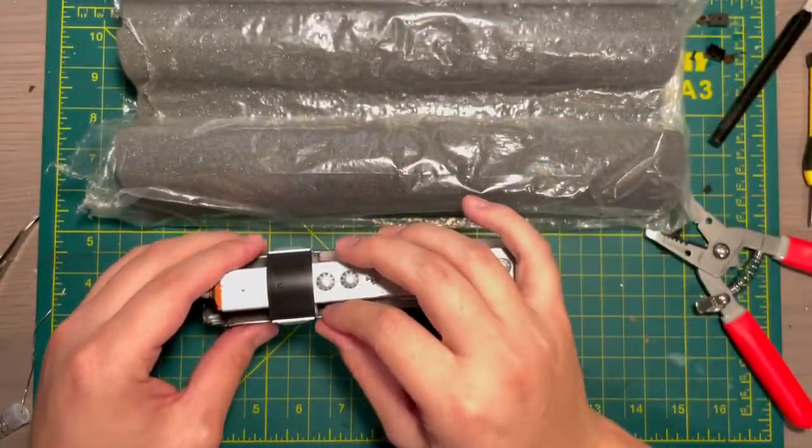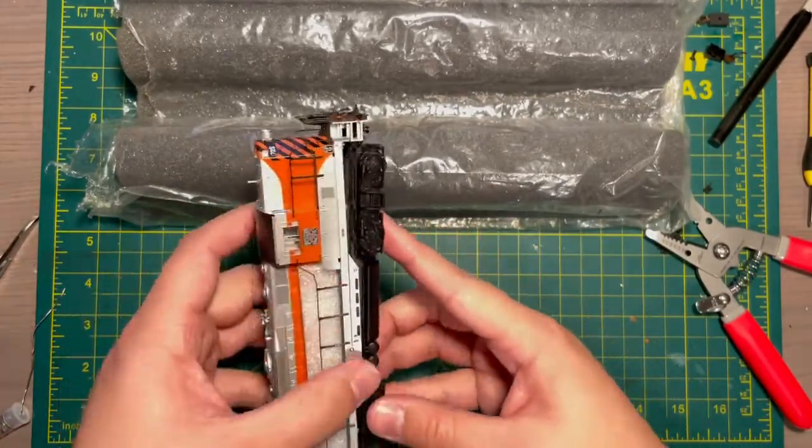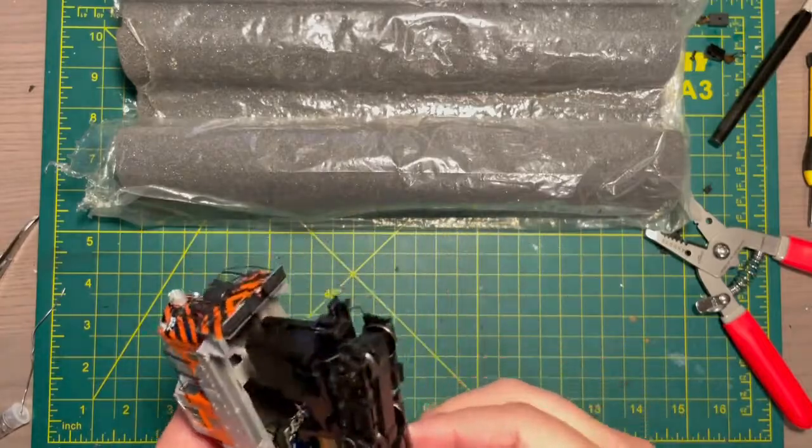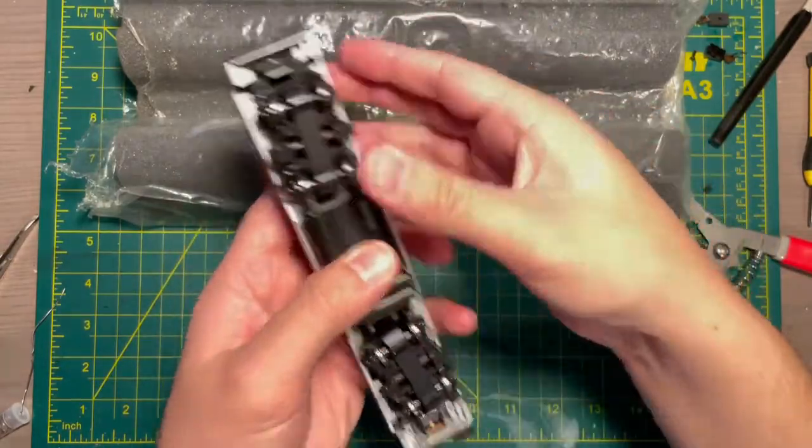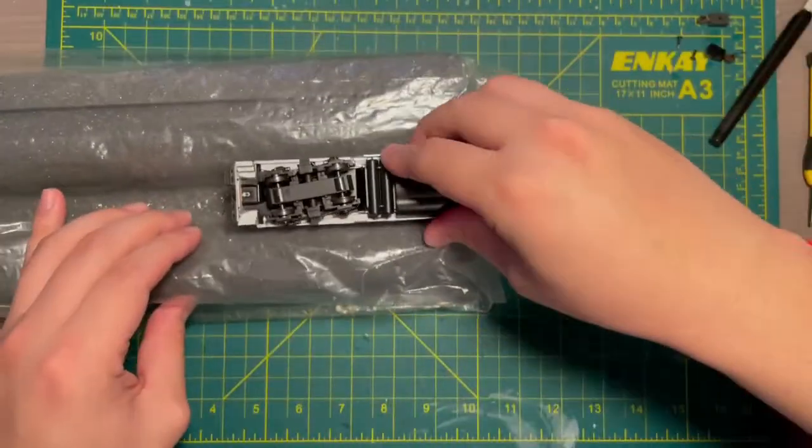After all that soldering time, it's now for the moment of truth. We're going to be putting back on the shell, reinstalling the coupler boxes. Make sure that we do not pinch the coupler cut bar when installing the coupler box and installing the screw.